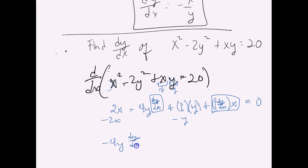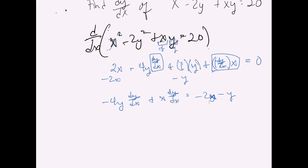So it looks like it's going to look something like this: 0 minus 2x minus y equals... So I just moved any term over that did not have the dy/dx, and now I've grouped these two on this side because they both have the dy/dx.